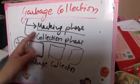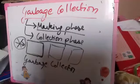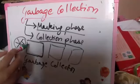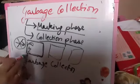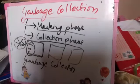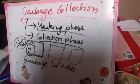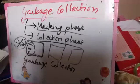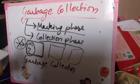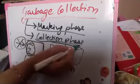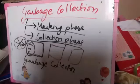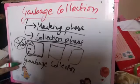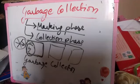In the collection phase, you write code so that whenever a function ends, all local variables of that function are marked. Whenever a user or multiple users require more memory, the collection phase runs: all marked variables are freed and returned to the memory pool so they can be reused by whoever requested them.